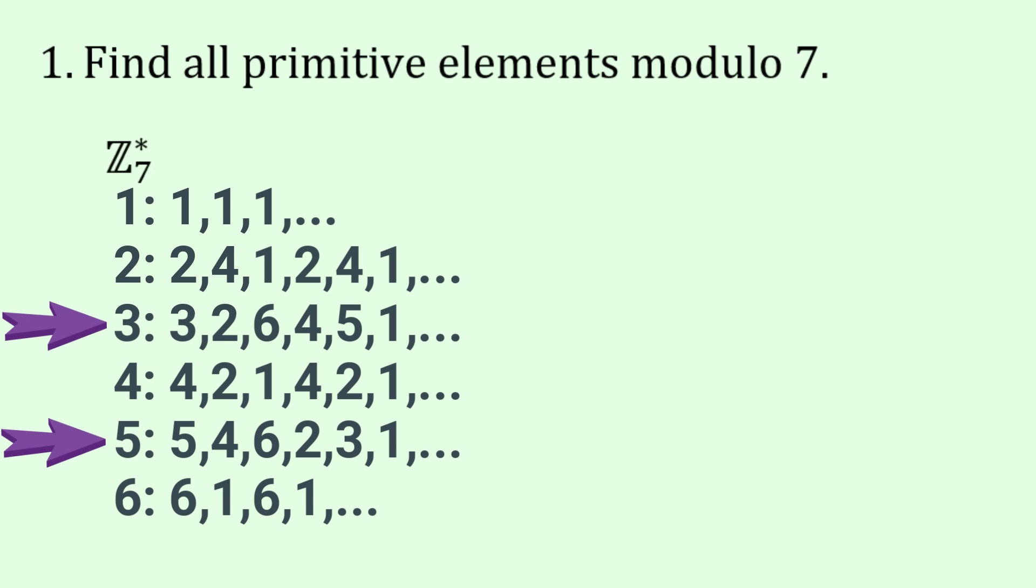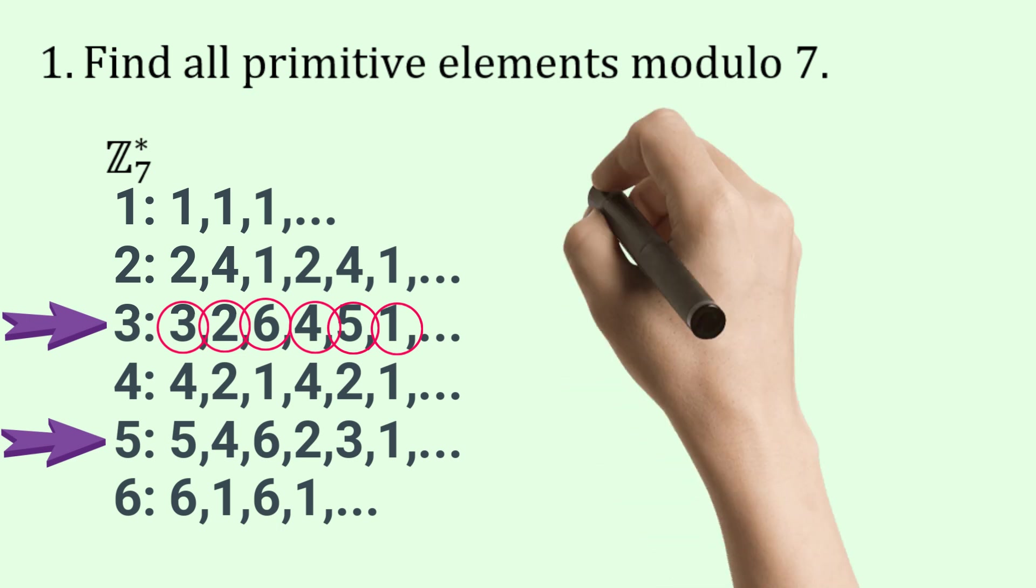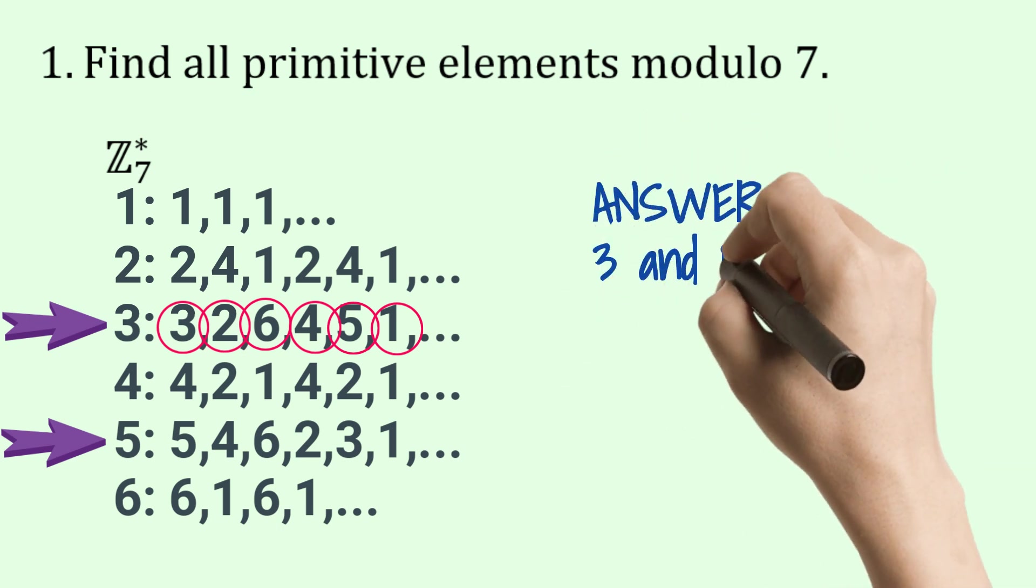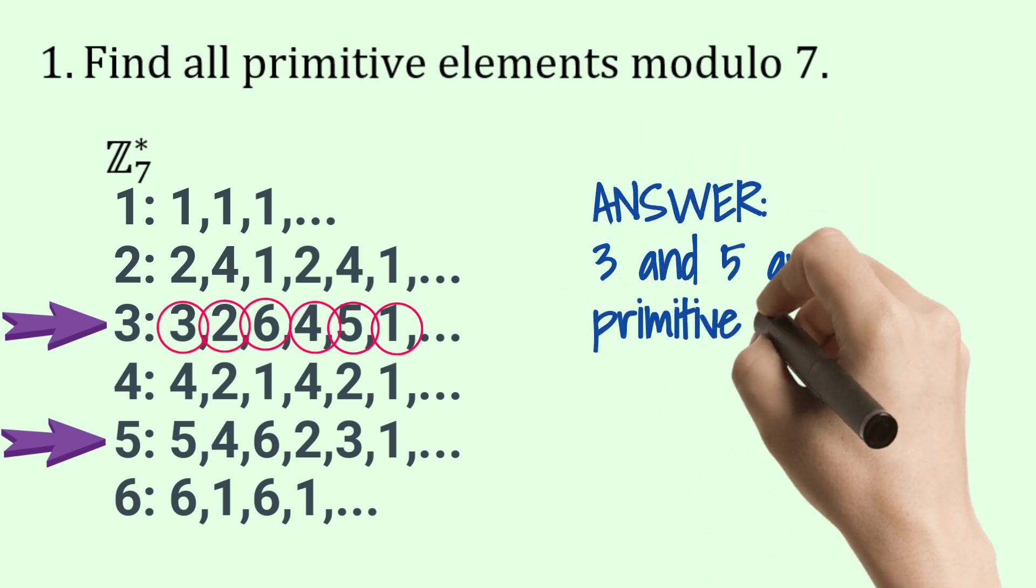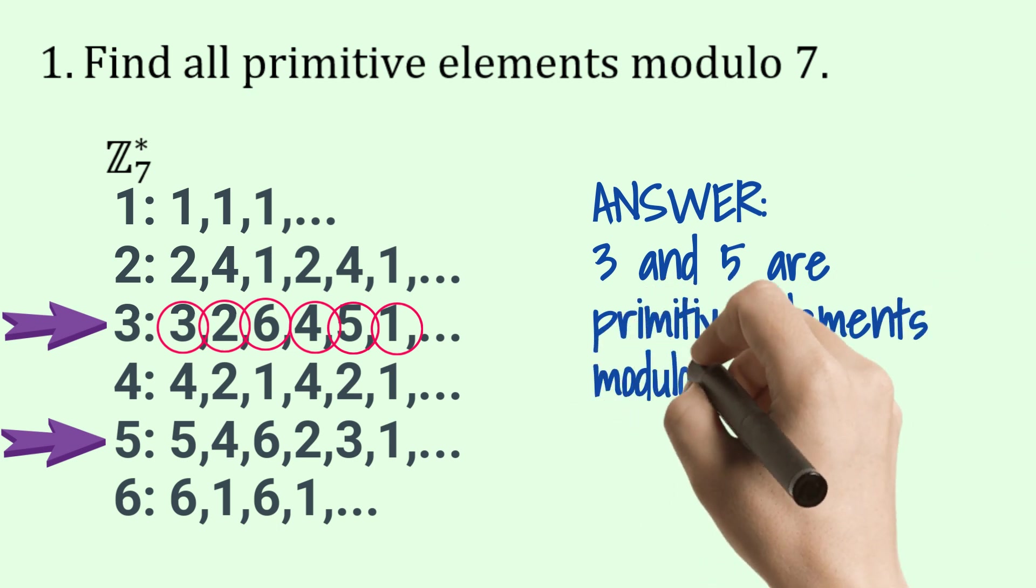You can see here with 3. The powers are 3, 2, 6, 4, 5 and 1. Well that's all the elements of Z star 7. So in that case we say it's a primitive element. So the answer is that 3 and 5 are the primitive elements modulo 7.